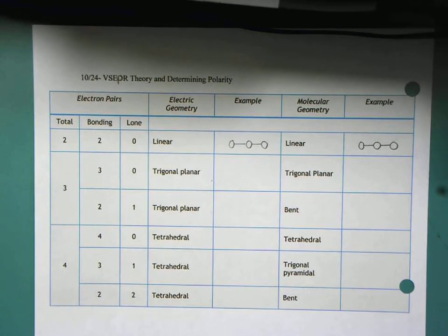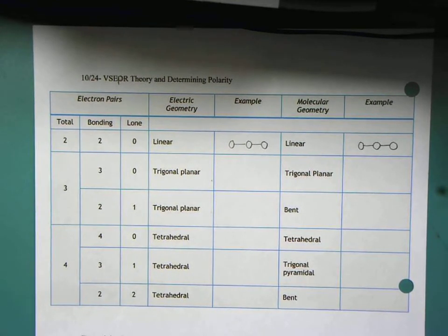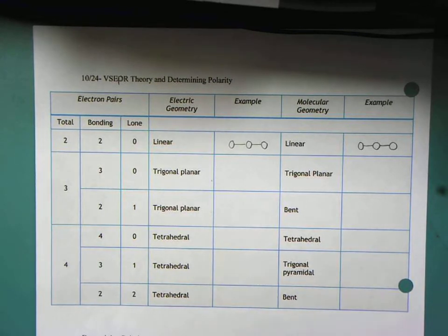So now that we've learned about Lewis dots, I want you guys to start thinking about what these molecules actually look like in three-dimensional space. We know that molecules have to be 3D because we live in a 3D world. So in order to represent the way they actually look in three-dimensional space, we use the VSEPR theory.